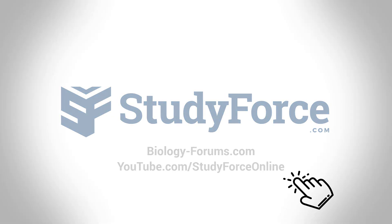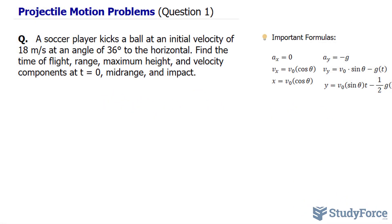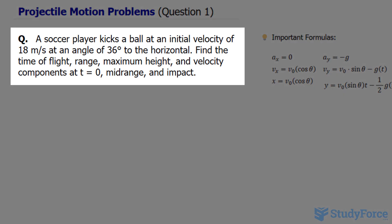In this lesson we'll be discussing projectile motion problems, this is question number one. The question reads, a soccer player kicks a ball at an initial velocity of 18 meters per second at an angle of 36 degrees to the horizontal.